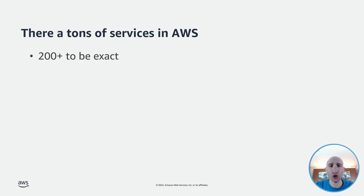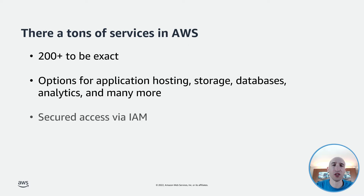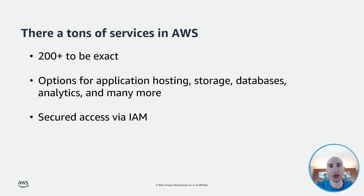And to be exact, there are over 200 services that exist out of AWS today, with options for all sorts of different services pertaining to application hosting, storage, databases, and many more. All AWS services can be secured via IAM, which we've talked about in a previous video, providing a really strong least-privileged approach to how we allow access to AWS services.